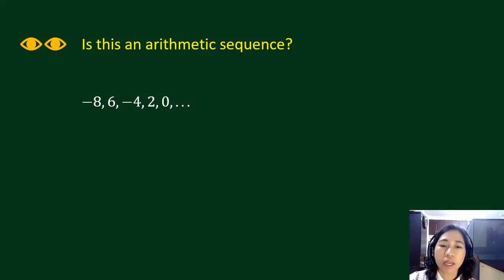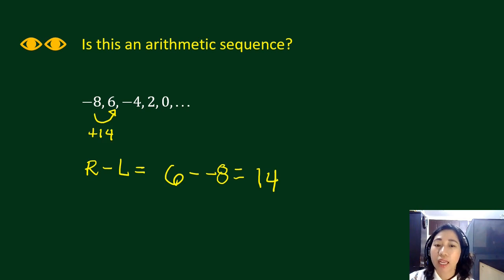Next. This one. Is this an arithmetic sequence? Negative 8 became 6. What will you do? You always proceed with your right minus left. So that's 6 minus negative 8. So that's 14. So that means from negative 8, when you add 14, you get 6. Now, question. Is 6 plus 14 equal to negative 4? It's not. 6 plus 14, that is 20. So therefore, the answer is no. Not an arithmetic sequence.